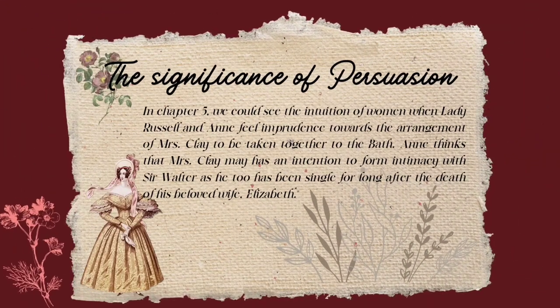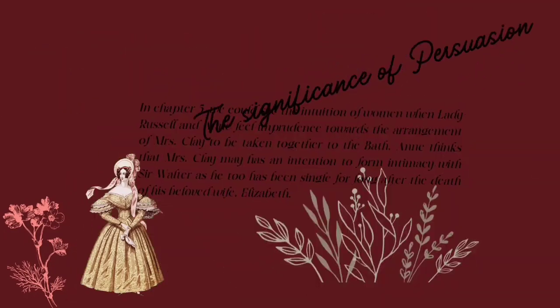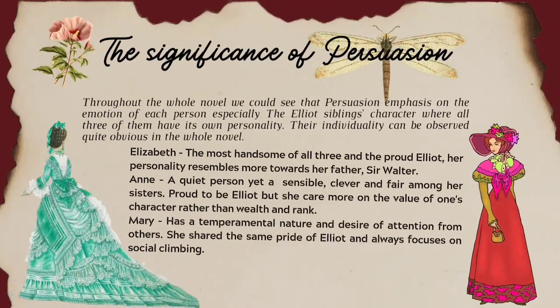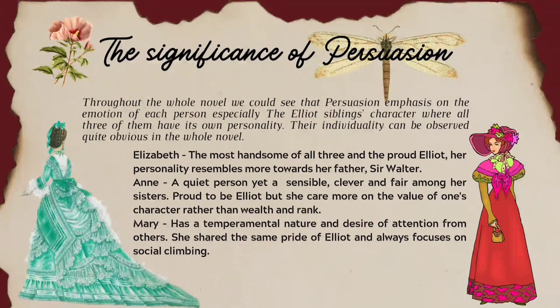In Chapter 5, we could see the intuition of women when Lady Russell and Anne feel imprudence towards the arrangement of Mrs. Clay to be taken to Bath. They think that Mrs. Clay may have an intention to form intimacy with Sir Walter, as he has been single for long after the death of his wife Elizabeth. Throughout the whole novel, Persuasion emphasises the emotion of each person, especially the Elliot siblings, whose individuality can be observed quite clearly.